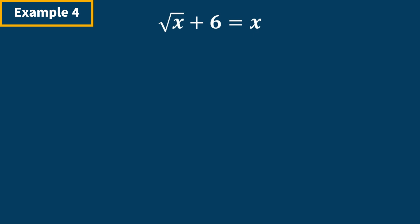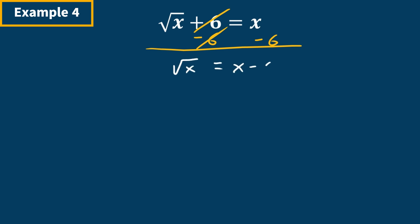Example four: the first thing we want to do is isolate the radical, so we move the 6 over to the right-hand side by subtracting. The 6s cancel and we have radical x is equal to x minus 6. Now we get rid of the radical sign by squaring both sides. Remember, you have to square the entire right-hand side — you can't just square the x and then square the 6. The radical and the 2 cancel, leaving x equals (x − 6) squared.